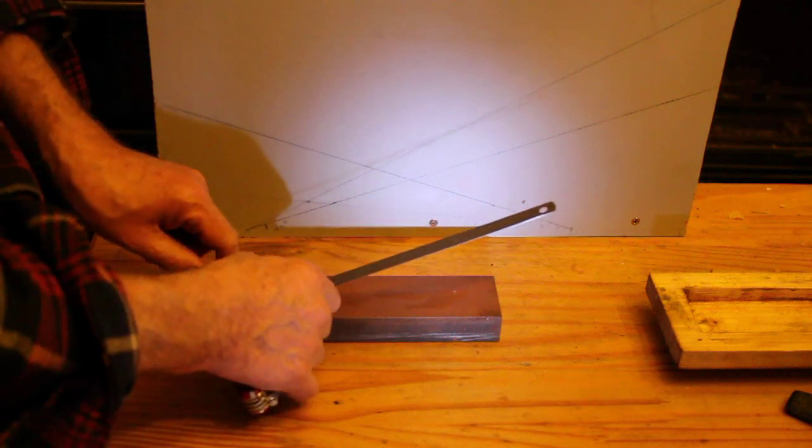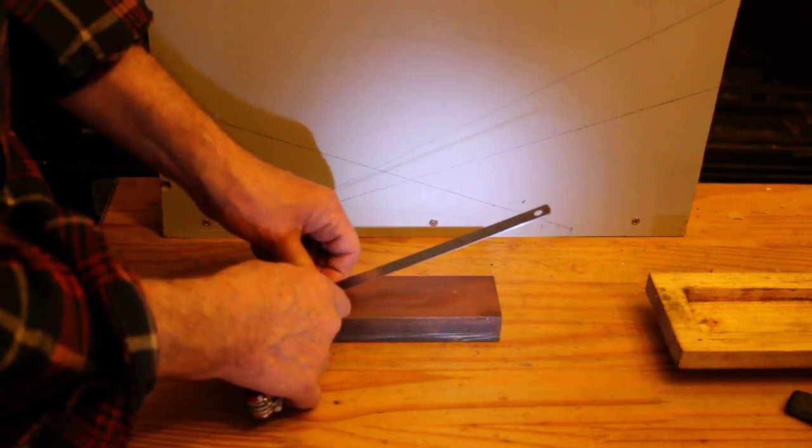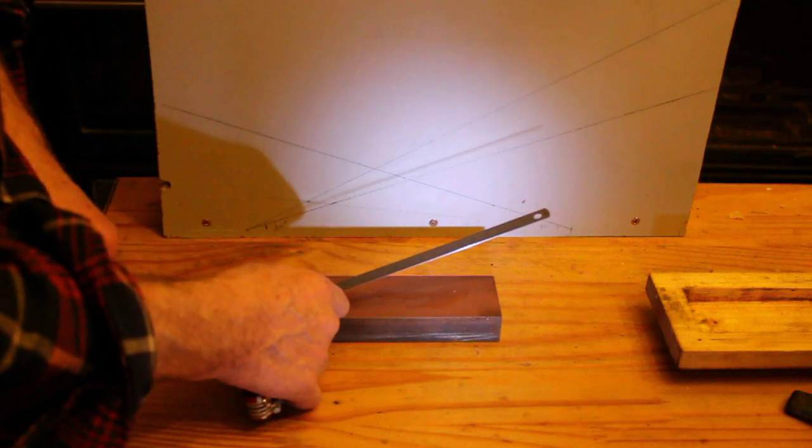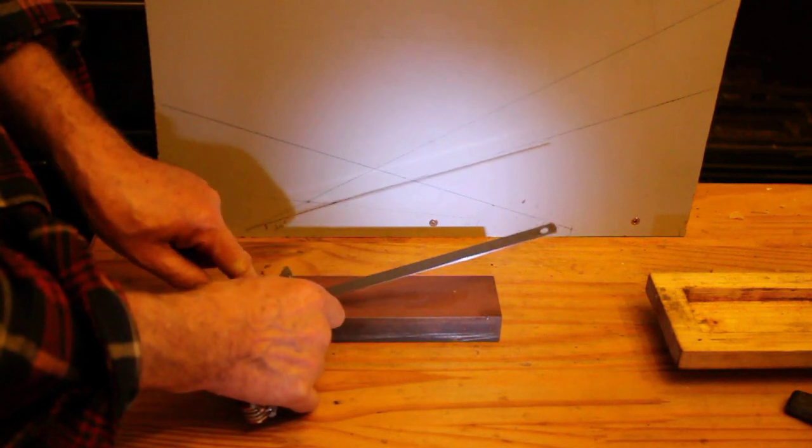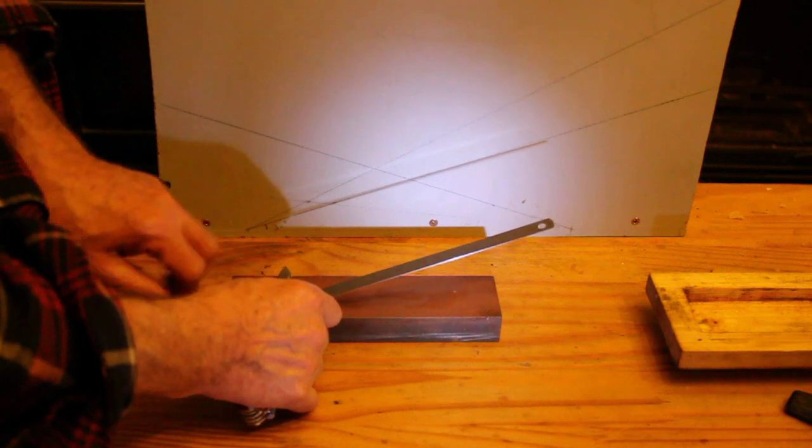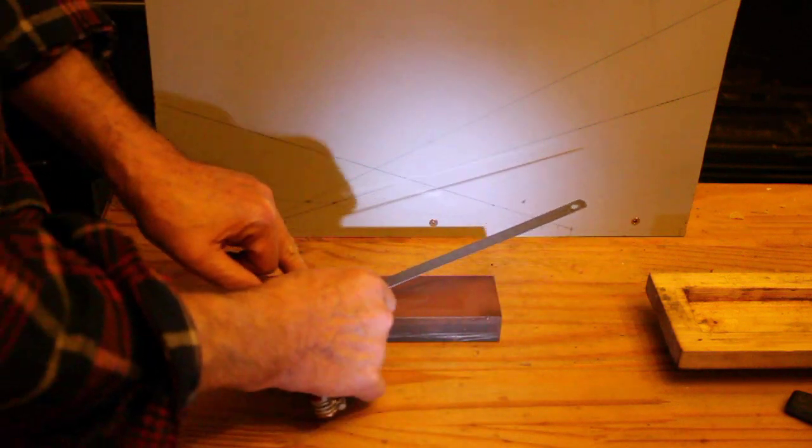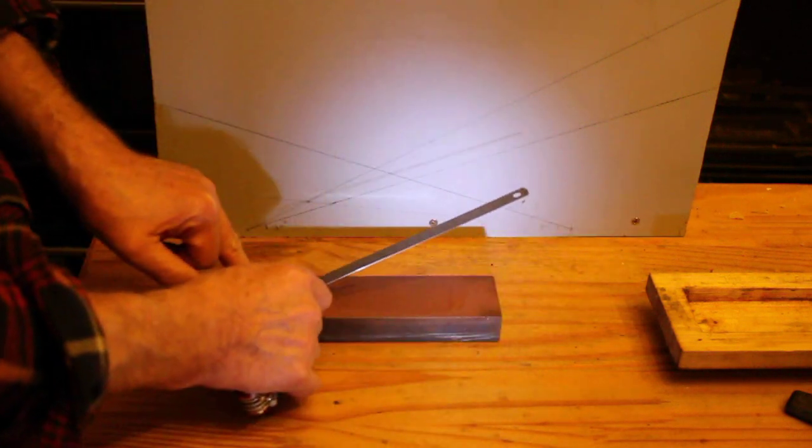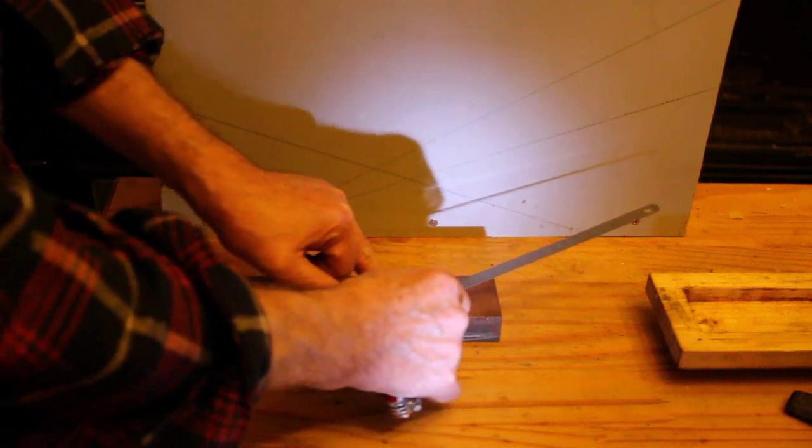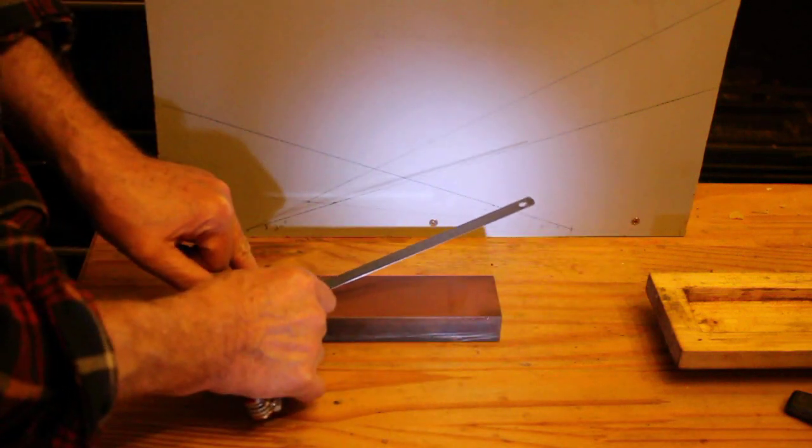So all I do, onto the oilstone, put the knife blade on. I'm holding it firmly, the rule firmly onto the flat of the knife blade, and then just draw it up. Each time I can feel the angle, see the angle, and just repeat it.